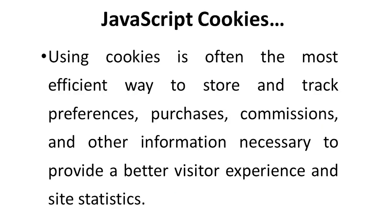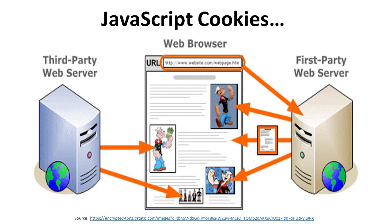Here we have a tracking cookie. Using cookies is often the most efficient way to store and track preferences, purchases, commissions, and other information necessary to provide a better visitor experience and site statistics. Here, a web browser contacts a first-party web server, which provides access to various functions, displaying requested content, also assisted by a third-party web server.